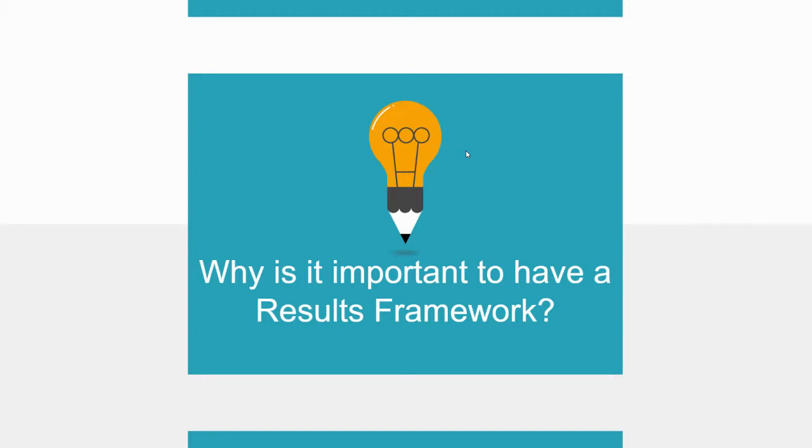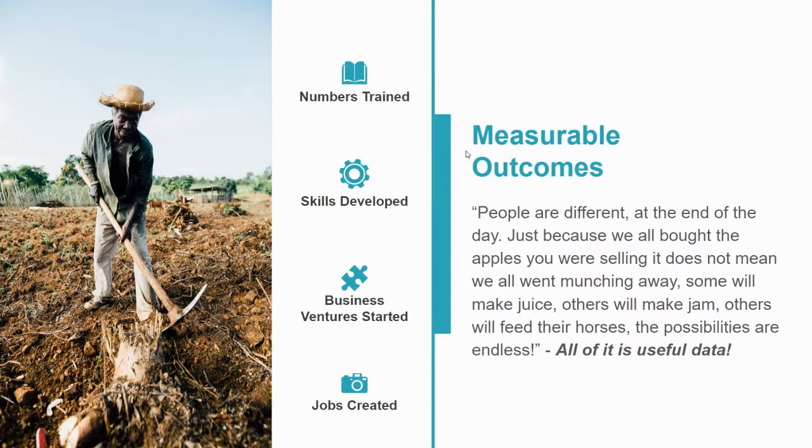This framework helps you understand the breadth of the effect your program could have, and the various facets of people's lives that could be changed by it. Because at the end of the day, people are different. Just because we all bought the apples that you were selling, it does not mean we all went munching away. Some people will make juice, others will make jam, others will feed their horses. The possibilities are endless, and all of this is useful data that we can measure.